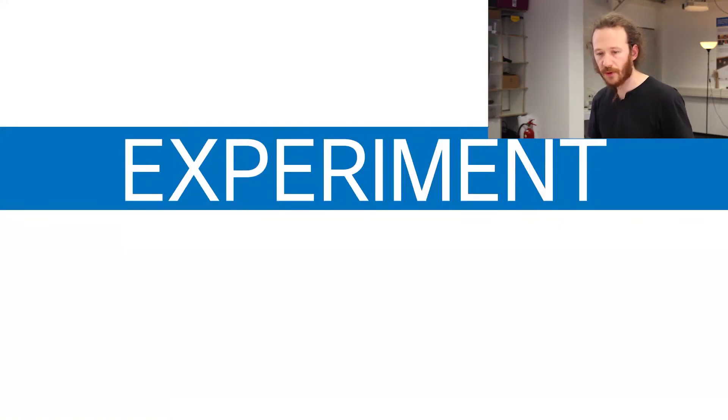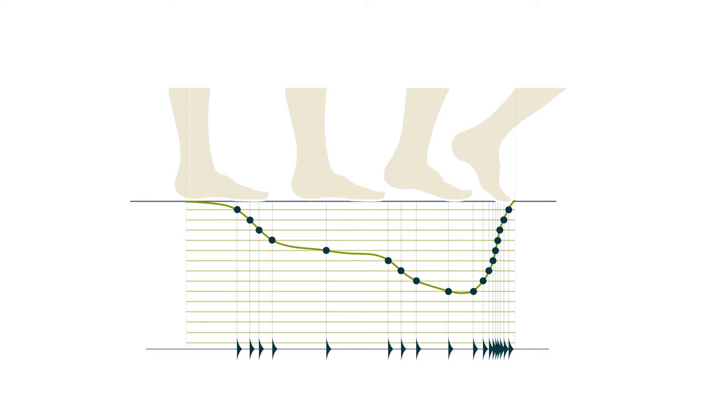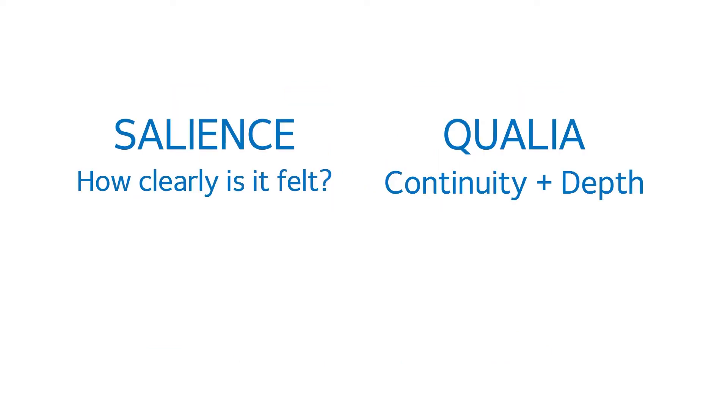We use this platform for a bunch of experiments. I'm going to just describe a very small sliver of what we did experimentally. Here we looked at the effects of increasing the number of bins, basically increasing the granularity of such a pressure interaction. This is perceived as compliance. And we looked at how is this compliance perceived? Specifically, we looked at salience. How clearly do you feel compliance at all? And then we looked at some qualia, like what type of compliance are you feeling?